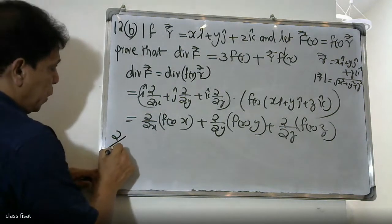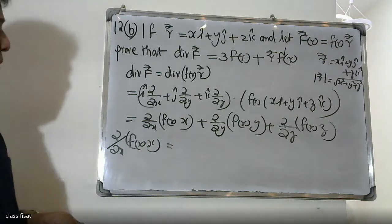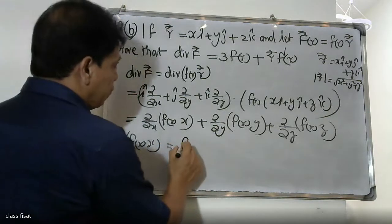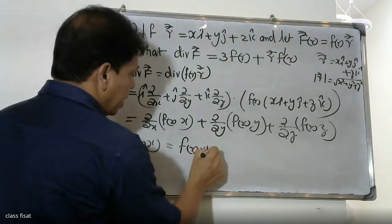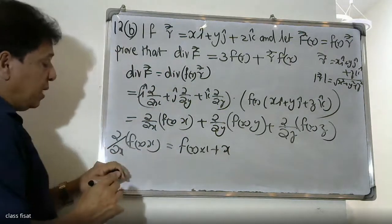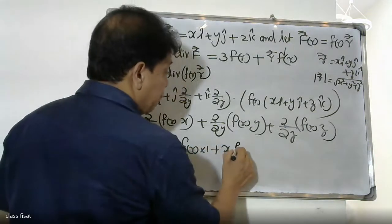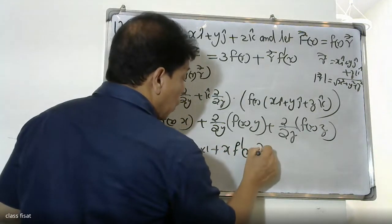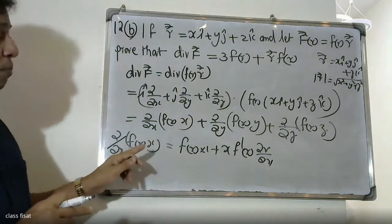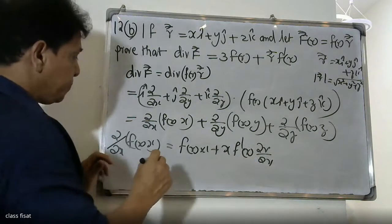Now we differentiate dou by dou x of f(r) into x. We are differentiating with respect to x, so f dash r times dou r by dou x, applying the product rule, gives us f(r) plus x into f dash r into dou r by dou x.